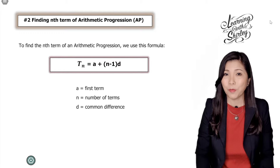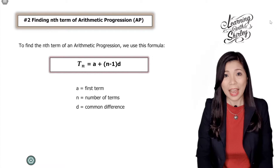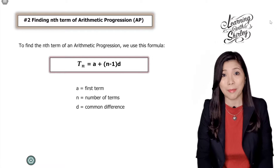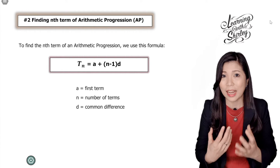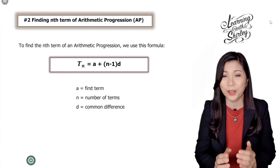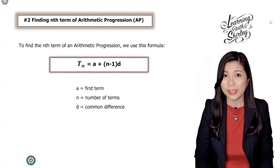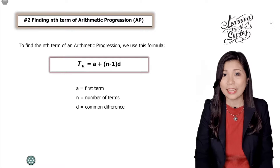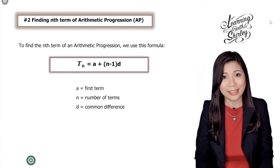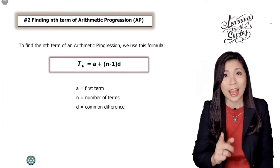To find the nth term of an arithmetic progression, we have to memorize this formula: tn equals to a plus (n minus 1) d. Say it out many, many times, because in this chapter most of the questions will use this formula. tn stands for nth term, a stands for first term, n stands for number of terms, and d stands for common difference. Remember: tn equals to a plus (n minus 1) d.